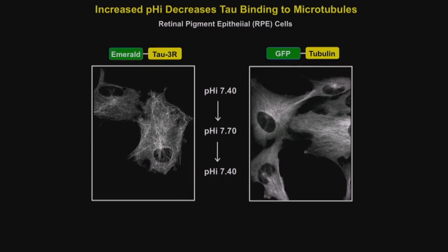We thought — maybe naively — that a decrease in pH might cause tau to fall off microtubules. That's not what we see at all. We see that an increase in pH completely disrupts tau-microtubule binding.